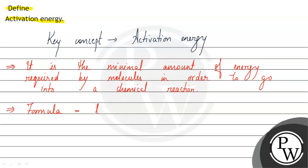log K2 upon K1 equals Ea upon 2.303R, and in brackets T2 minus T1 upon T1 T2.